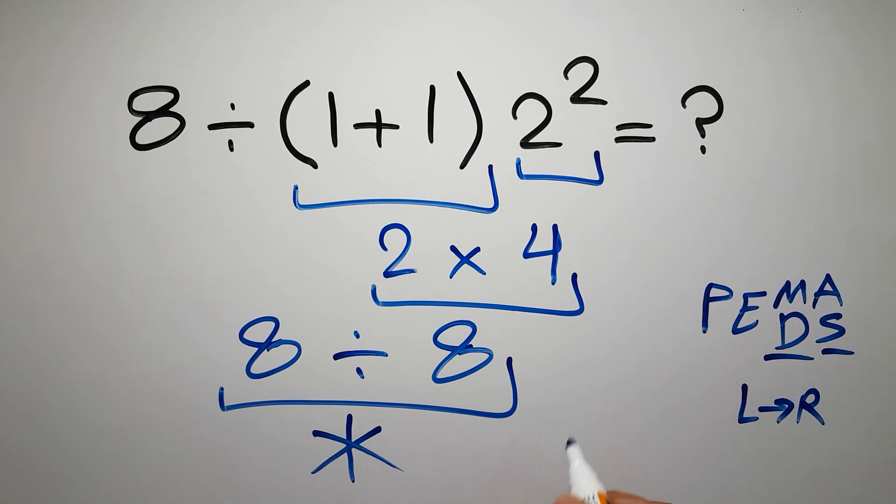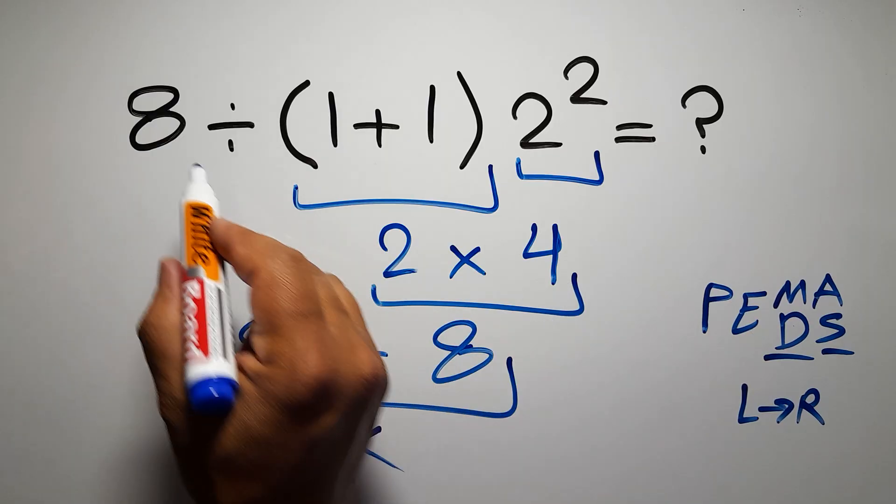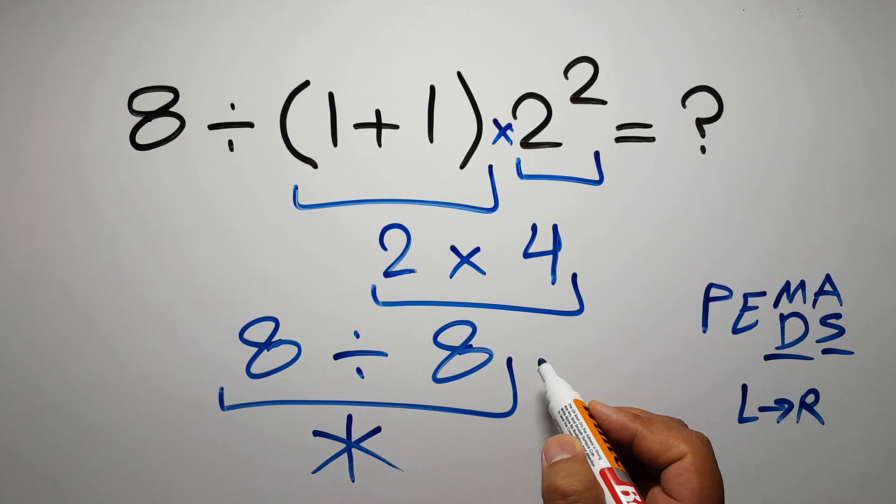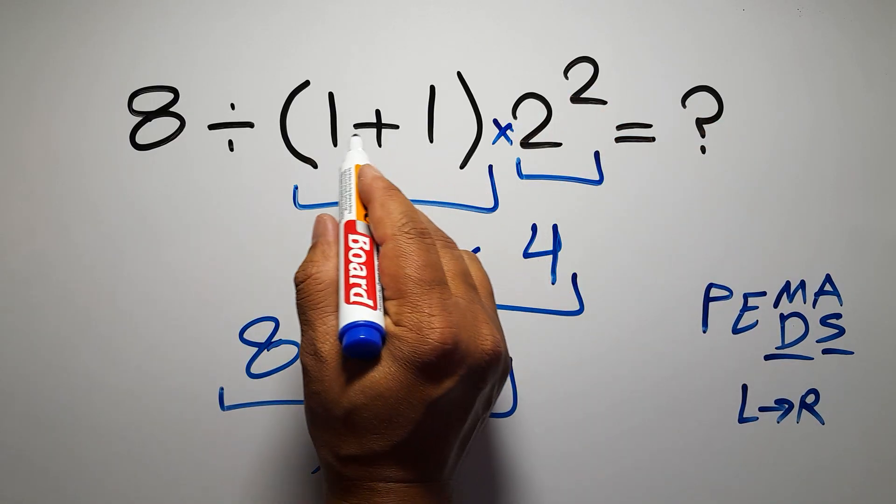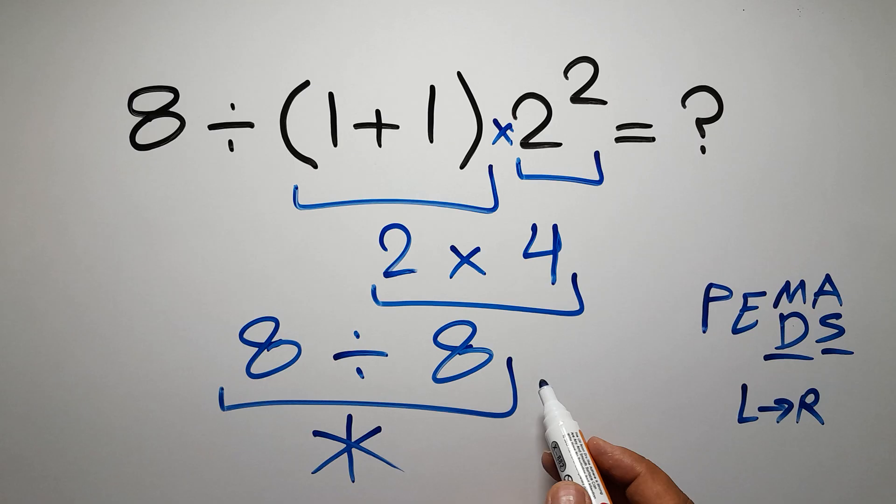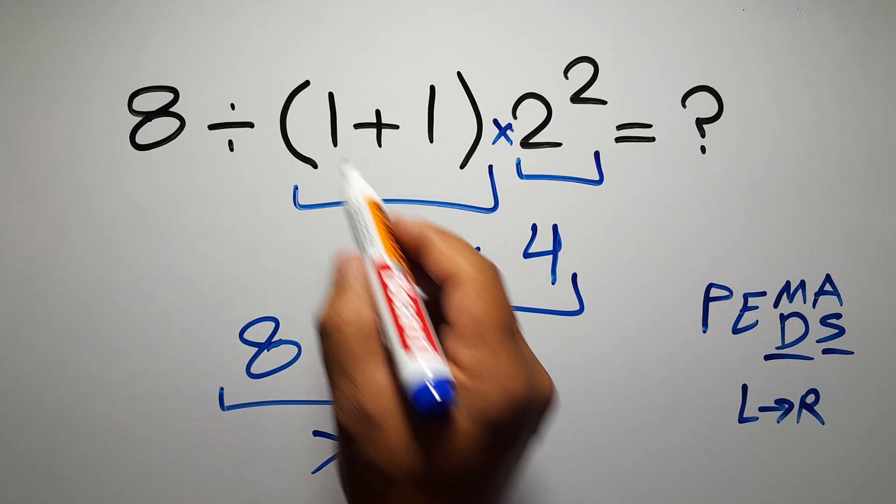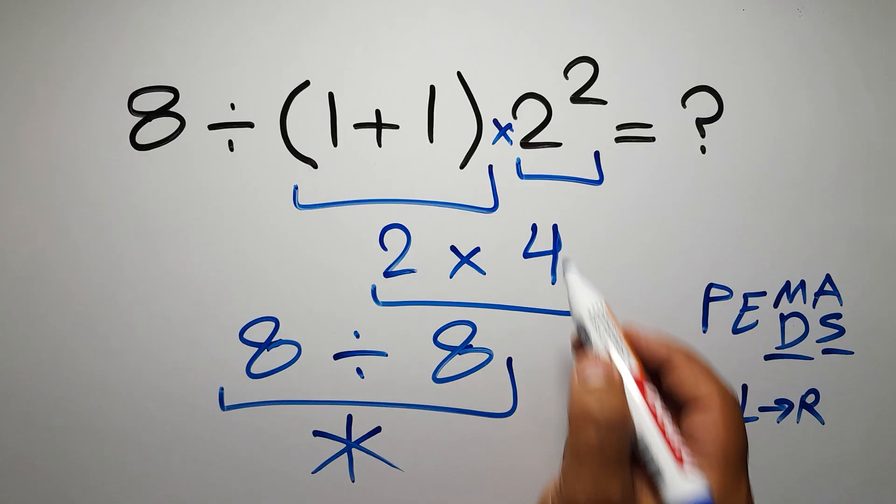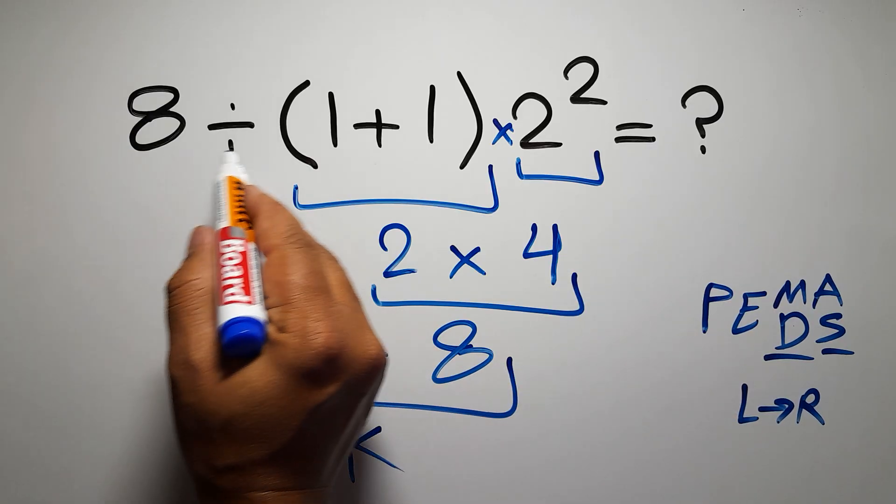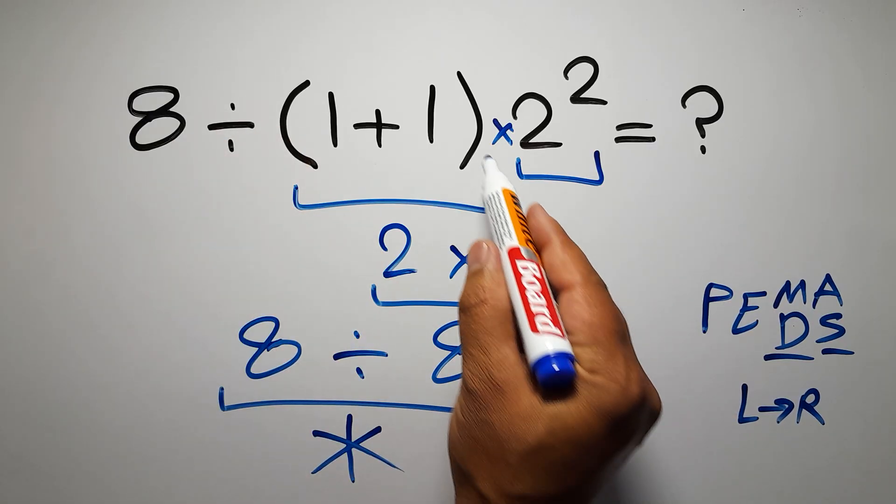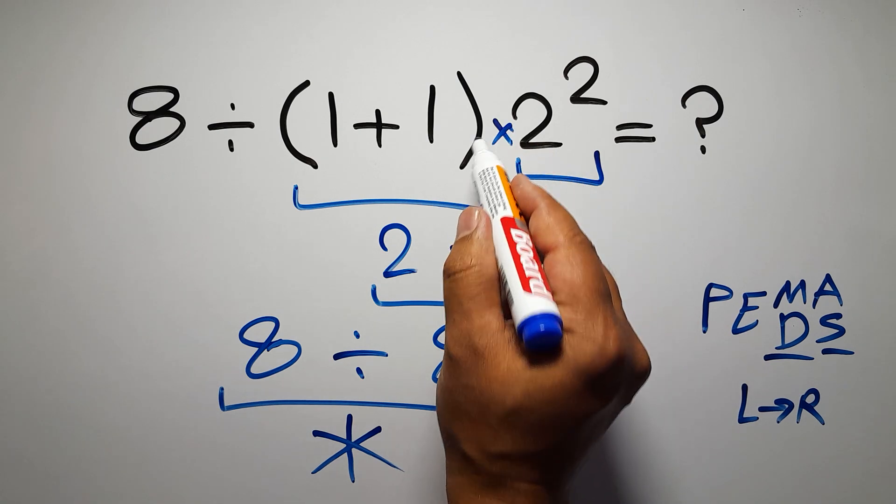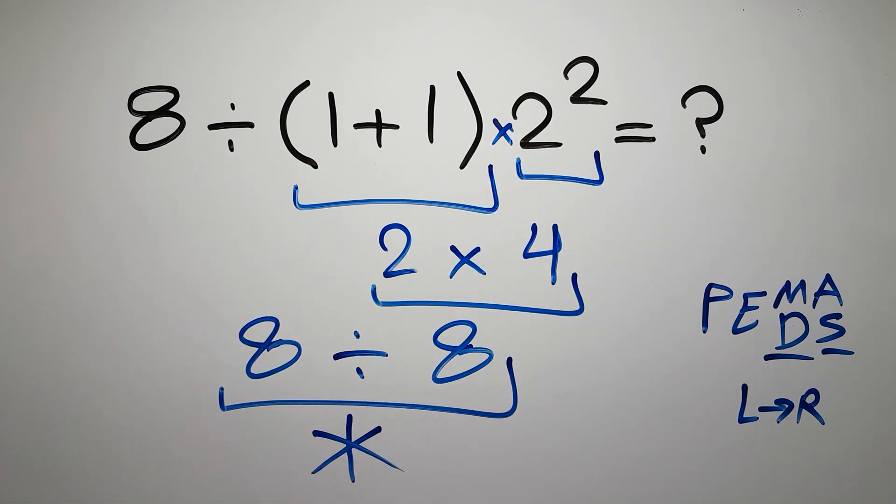In this expression we have one division, one parentheses, one multiplication, and one exponent. Inside these parentheses we have one addition. So first we have to do this parentheses, then this exponent, then this division, and finally this multiplication. If you do this multiplication before this division, it is wrong.